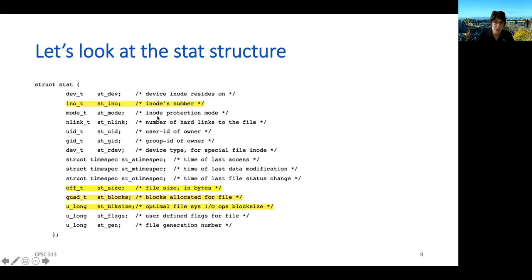You get a mode, which corresponds to the permissions. We have this link count, which is the number of names associated with the file. You get to find out who the file belongs to, the groups, things like that. There's important information about how large the file is. We get a size. We also get a number of blocks that have been allocated to the file.